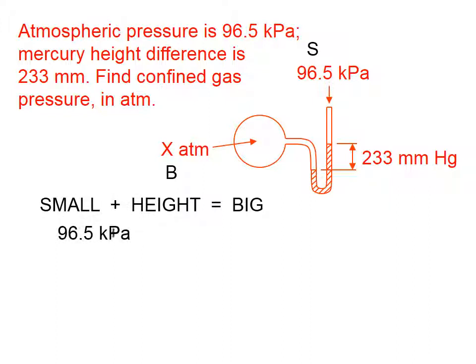Let's follow up what we have with the equation. The small pressure is 96.5 kilopascals. The height is 233 millimeters of mercury, and that's going to equal the big pressure, which is what we're asked to find. So this is a simple addition problem. The only problem is that the units don't agree. Because we want our final answer in atmospheres, let's convert the other two pressures to atmospheres.